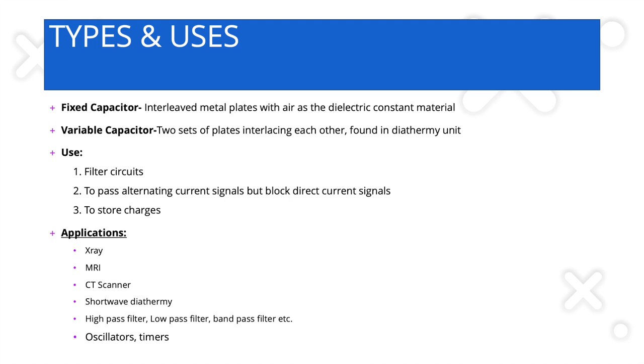Capacitance in series is represented as 1/C1 + 1/C2 + 1/C3, while capacitance in parallel is C1 + C2 + C3 — the opposite of series. You don't need to remember these equations or calculate capacitance values as in physics class. There are two types of capacitors: a fixed capacitor and a variable capacitor. A fixed capacitor has two interleaved metal plates with air as the dielectric medium.